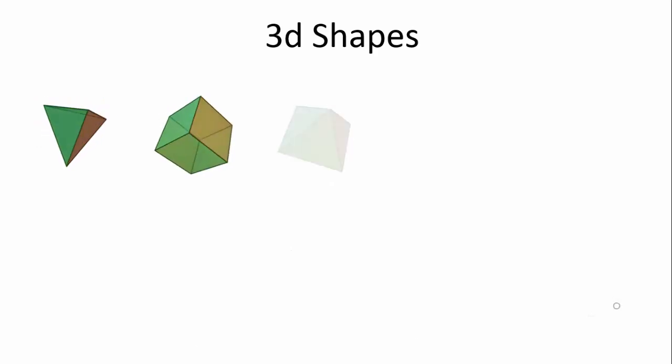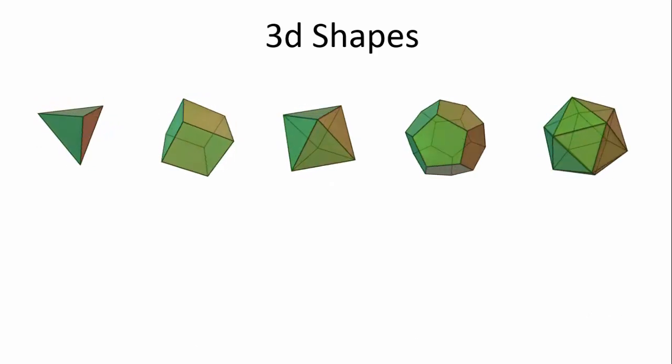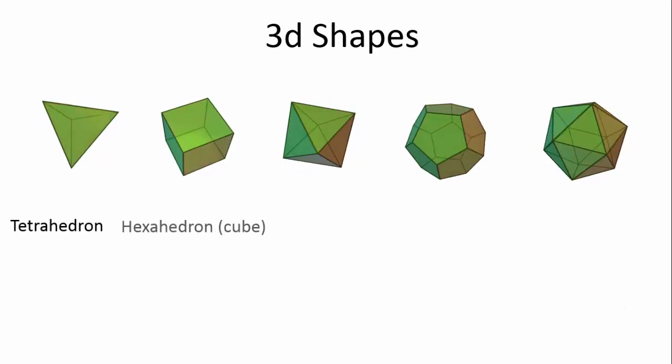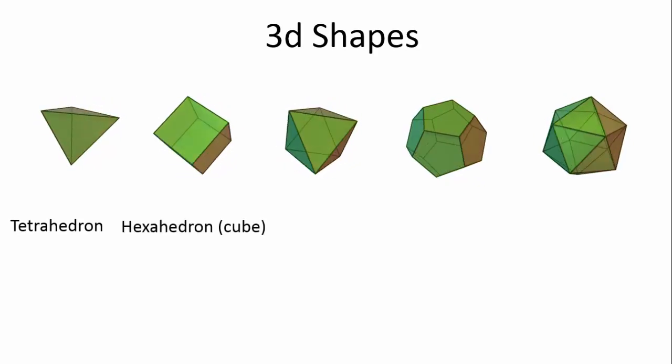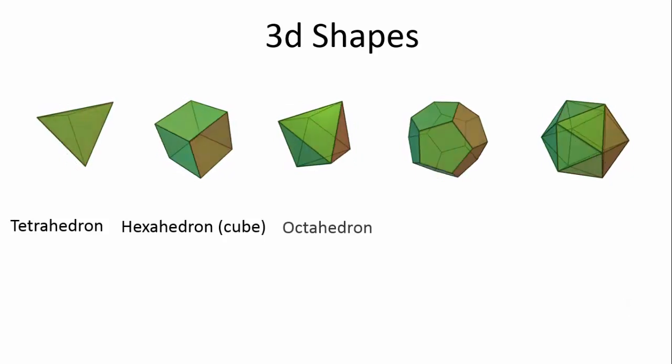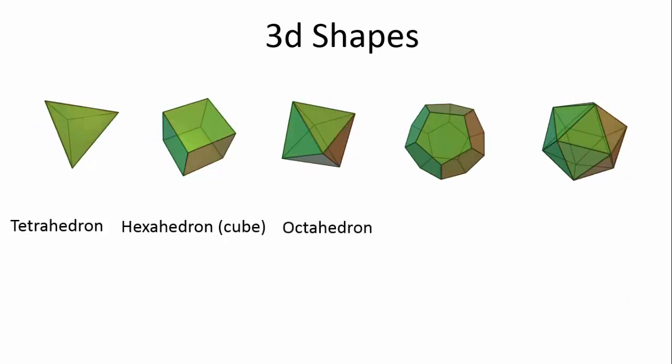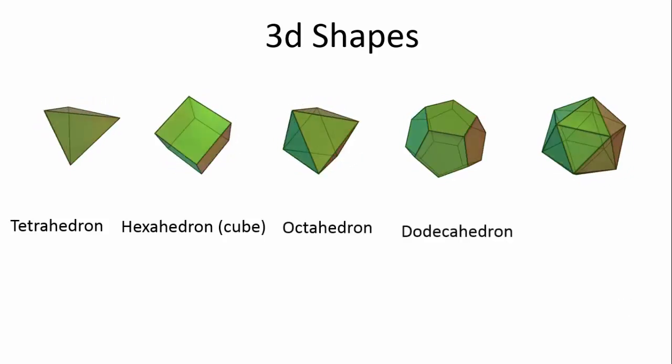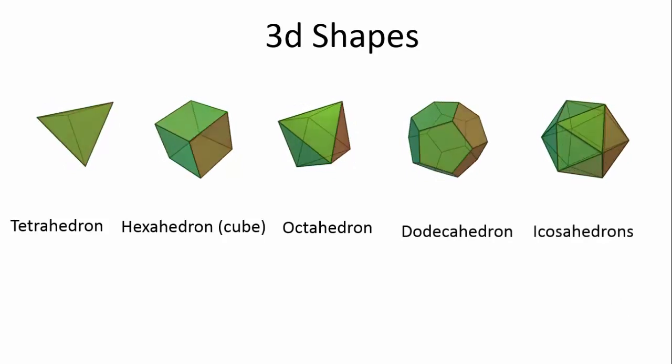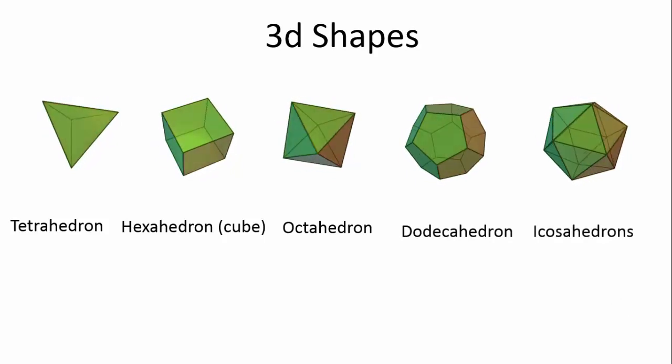We're going to talk now about the important things about these. Like I said, we have our shapes. I've put them up here. We have our tetrahedron, our hexahedron, and that's our cube. We have our octahedron, our dodecahedron, and then an icosahedron. These are our shapes.